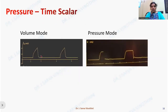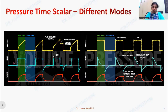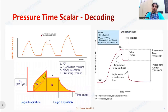In the volume control mode, the pressure-time scalar has a shark-fin appearance, whereas in the pressure control mode it has a square waveform because we have determined the pressure. The flow-time scalar in volume control mode shows a square wave pattern, while in pressure control mode it shows a descending ramp waveform. When we press the inspiratory hold button in volume control mode, we see a plateau pressure appearing in the pressure-time scalar. The peak pressure is followed by the plateau pressure on pressing the inspiratory hold button.